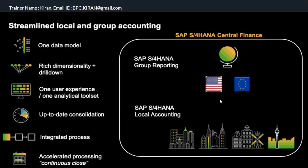SAP introduced the group reporting preparation ledger concept to make reconciliation easier. Using this concept, whatever data you post in local accounting can also derive group reporting fields. There will be a mapping from operational GL accounts to financial statement items, and the system can update those financial statement items in the ACDOCA table itself, since group reporting is part of finance and those fields are available in the universal journal table.